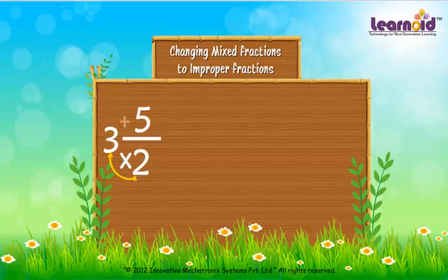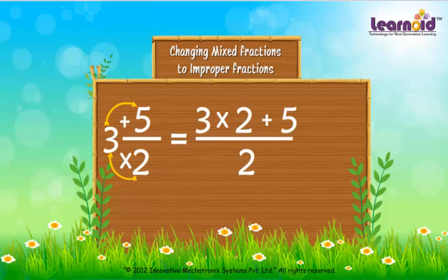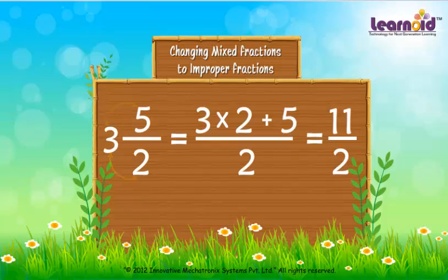Next example: Change 3 and 5 by 2 to Improper Fraction. Multiply 2 and 3 and then add the product to 5. The 2 will remain in the denominator. 2 into 3 plus 5 by 2 gives 11 by 2. The Improper Fraction of 3 and 5 by 2 is 11 by 2.